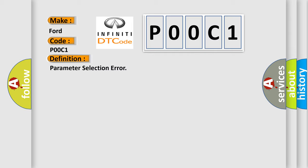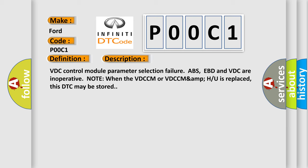And now this is a short description of this DTC code: VDC control module parameter selection failure. ABS, EBD, and VDC are inoperative. Note: When the VDCCM or VDCCMAMPH is replaced, this DTC may be stored.